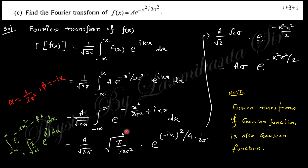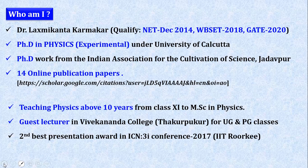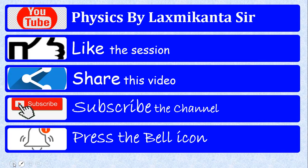With β² = (iκ)² and 4α = 4/(2σ²) = 2/σ², substituting these and simplifying gives the Fourier transform of the Gaussian function — which is itself a Gaussian. This is an important result: the Fourier transform of a Gaussian is also a Gaussian. With this, we have completed the 2022 CC8 paper. In upcoming videos we will cover 2023 CC8, then CC9 and CC10. Stay connected — thank you and take care.